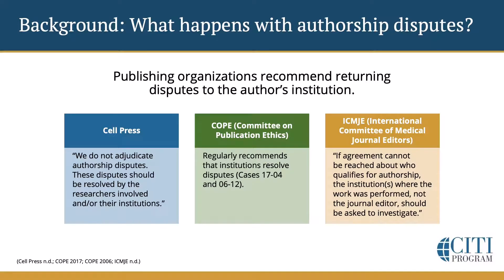It turns out that some of the main resources in publishing ethics — like Cell Press, COPE, and ICMJE — recommend that a publisher or editorial office is not the place where a dispute should be resolved. Instead, publishers recommend that disputes get sent to the institutions where the research took place. Cell Press says, 'We do not adjudicate authorship disputes. They should be resolved by the researchers involved and or their institutions.' COPE has several cases recommending institutional resolution of disputes. And the ICMJE says, 'If agreement cannot be reached about who qualifies for authorship, the institutions where the work was performed, not the journal editor, should be asked to investigate.'